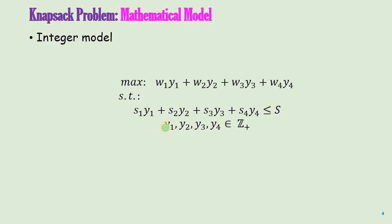Y1, Y2, Y3, Y4 — the variables of this problem — represent the number of units of item 1, item 2, item 3, and item 4 respectively. For example, Y1 equals 1 implies two units of item 1.